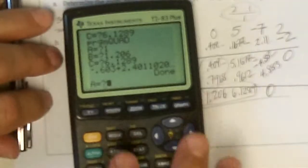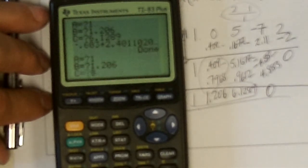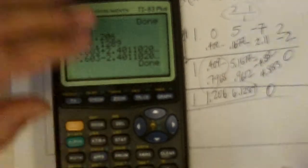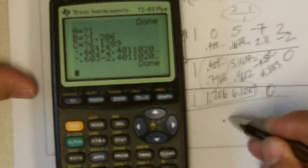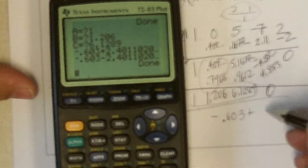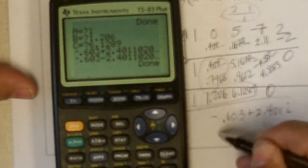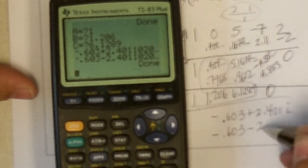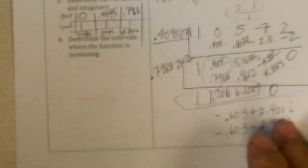One. One point. Two. Oh. Six. Six. Point. One. Two. Eight. Nine. There's my two answers. Point. Negative. Point. Six. Oh. Three. Plus. Two. Point. Four. One. I. And. Negative. Point. Six. Oh. Three. Minus. Two. Point. Four. One. I. Okay.